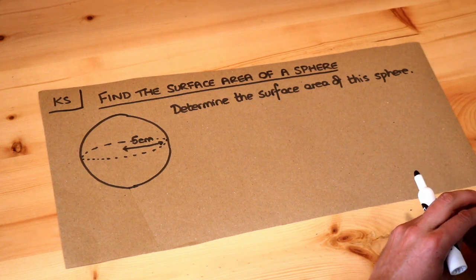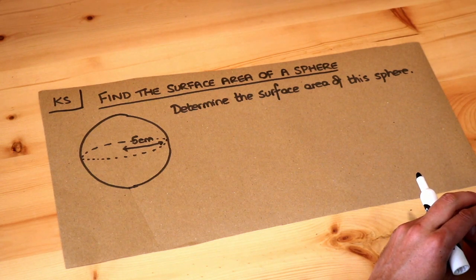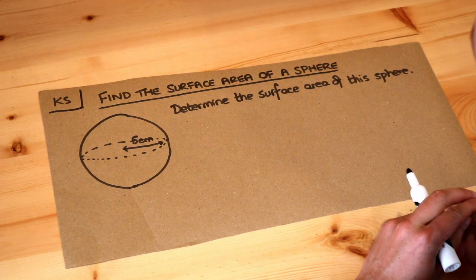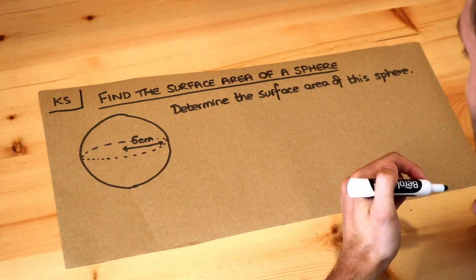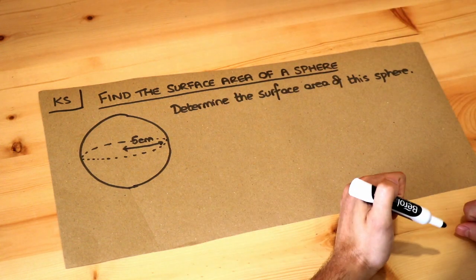Hello and welcome to Dr. Ross Mack's key skill video on finding the surface area of a sphere. Remember, the surface area is just the total area around it. It's like how much wrapping paper would you need to fully wrap the 3D solid.